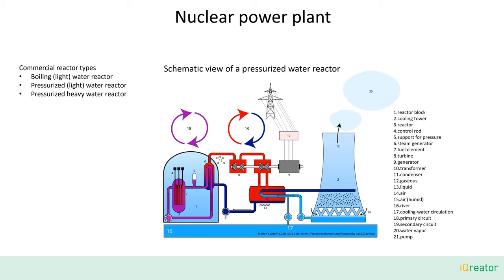Considering reactor designs currently in operation worldwide, one can distinguish between boiling water reactors and pressurized water reactors. Here is a schematic view of a pressurized water reactor. The fuel elements are constantly heating up water in the primary circuit. The heat from the primary circuit is exchanged in a boiler and heats up the cold high-pressure water of the secondary circuit, generating high-pressure steam. The steam is then propelling the turbines, losing temperature and pressure on the way. The turbine is powering the generator, and the cold low-pressure steam needs to be condensed with external cooling water from river, sea, or cooling tower, and then repressurized to close the circle.